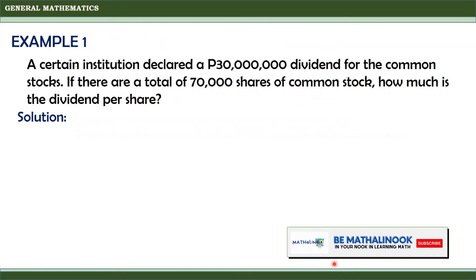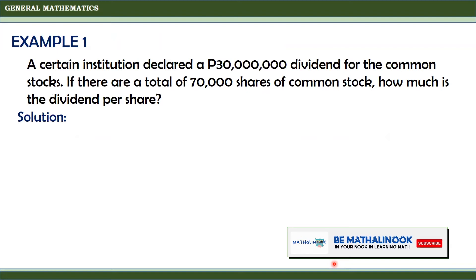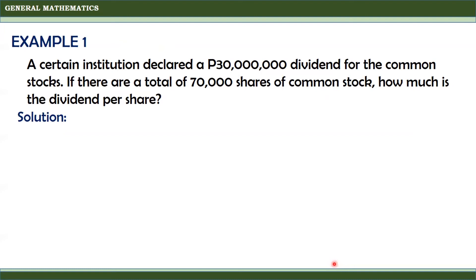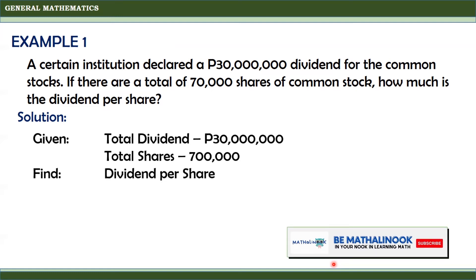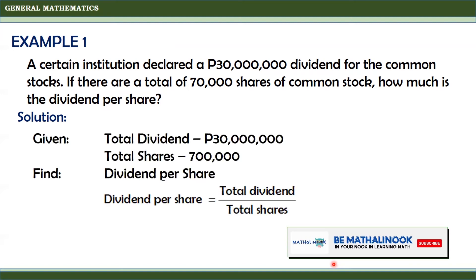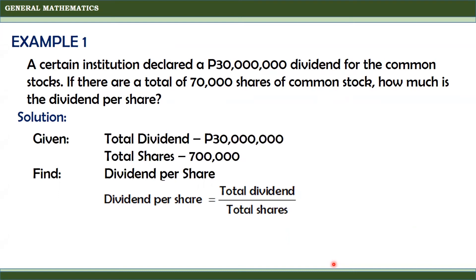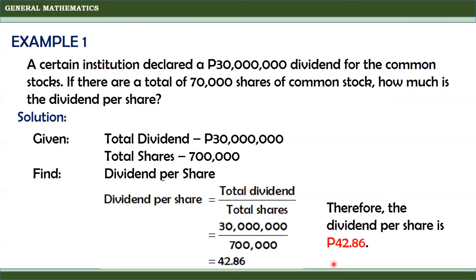Now let us have an example. A certain institution declared a 30 million pesos dividend for the common stocks. If there are a total of 700,000 shares of common stock, how much is the dividend per share? The total dividend is 30 million pesos and the total number of shares is 700,000. To find the dividend per share, we divide the total dividend by the total shares: 30,000,000 ÷ 700,000 = 42.86. Therefore, the dividend per share is 42.86 pesos.